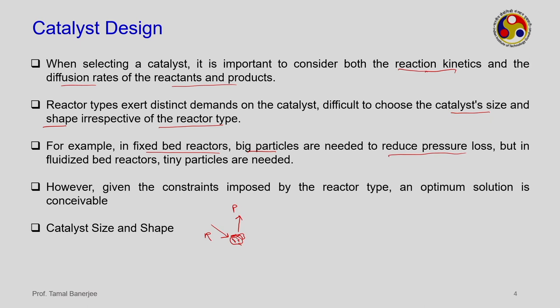In fluidized beds, tiny particles are needed because a higher surface-to-volume ratio gives higher reaction rates. However, tiny particles cause high pressure drop. You must choose a compromise: higher conversion with small particles but high pressure drop, or larger particles with lower pressure drop but less conversion. Given reactor constraints, an optimum solution depends on catalyst size and shape.